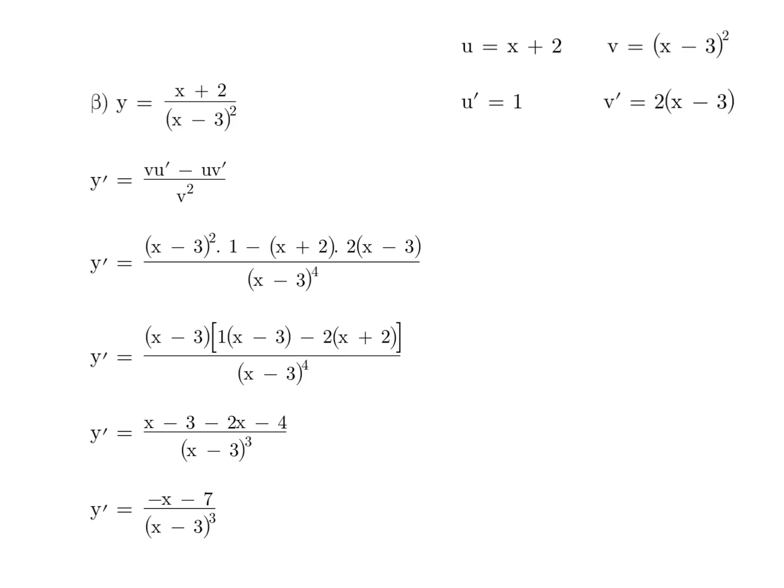We take x minus 3 out the front, and then the first term is 1 outside of x minus 3, and the second term with the minus in between is 2 outside of x plus 2. Notice that x minus 3 bracket and the x minus 3 to the 4 on the denominator simplify, leaving x minus 3 to the power of 3 on the denominator. Expanding what's inside the brackets and collecting like terms, you end up with minus x minus 7 all over x minus 3 cubed.